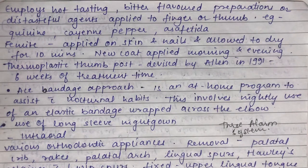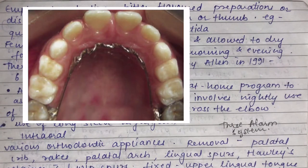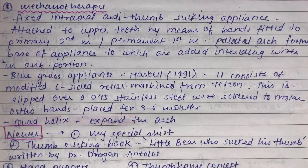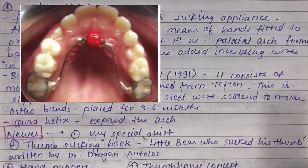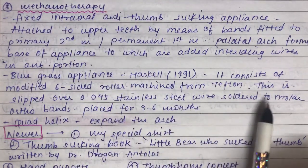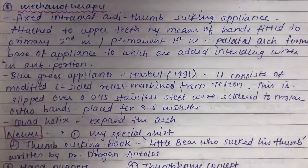Rakes are dental appliances for children over three and a half years of age who are persistent thumb suckers. This device has a series of fence-like projections that prevent sucking. The Blue Grass Appliance, given by Bruce Heskell in 1991, is a fixed appliance using a Teflon roller combined with positive reinforcement, used to manage thumb sucking in children aged 7 to 13. It consists of a six-sided roller machined from Teflon, slipped over a stainless steel wire soldered to molar ortho bands, placed for three to six months.